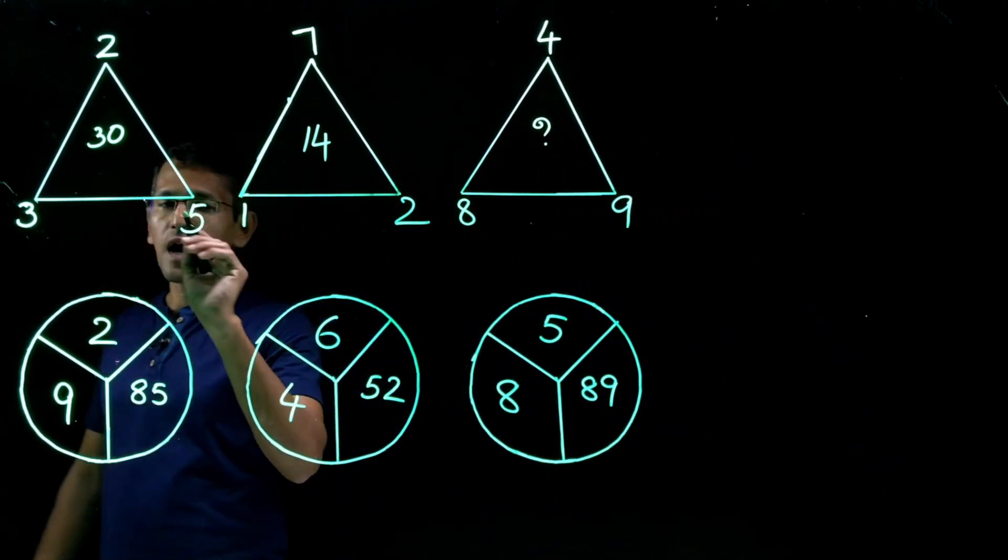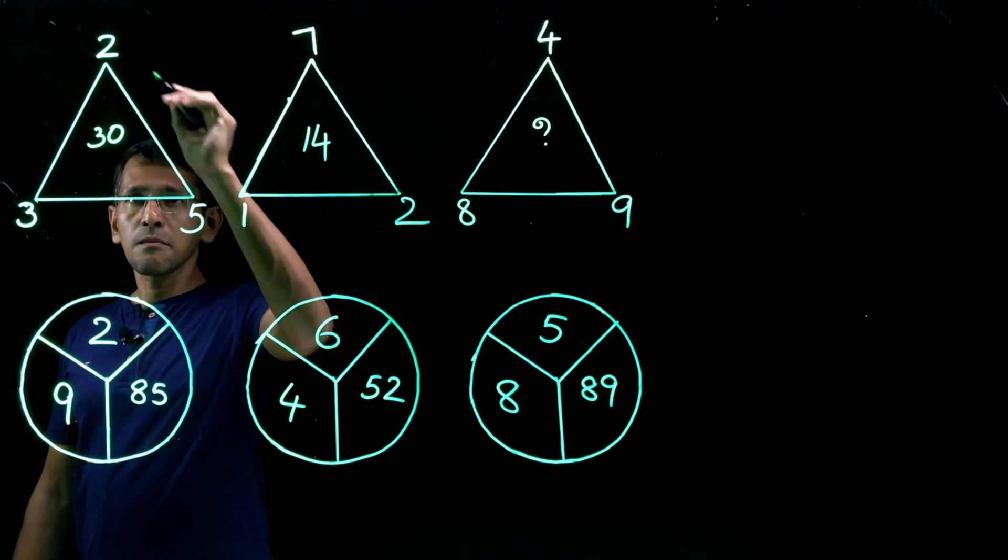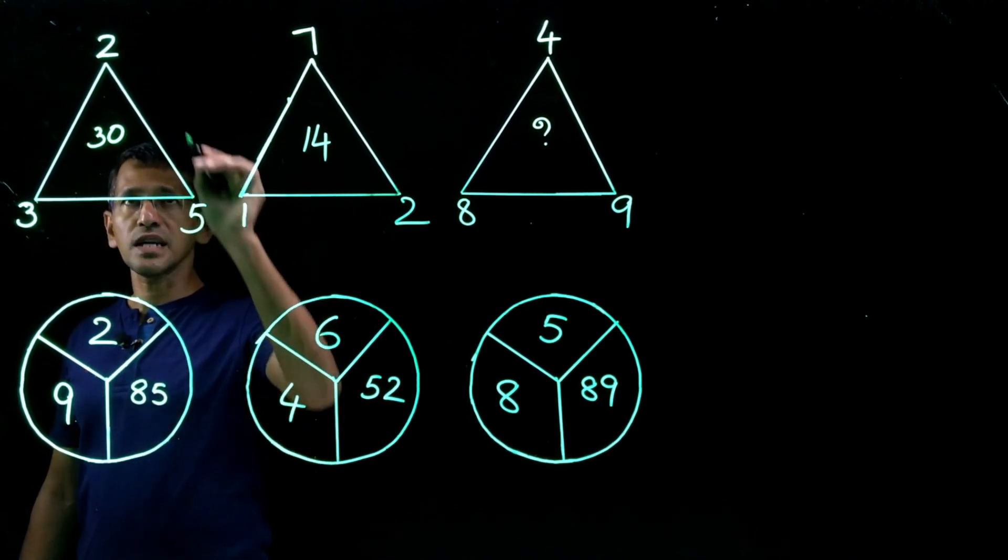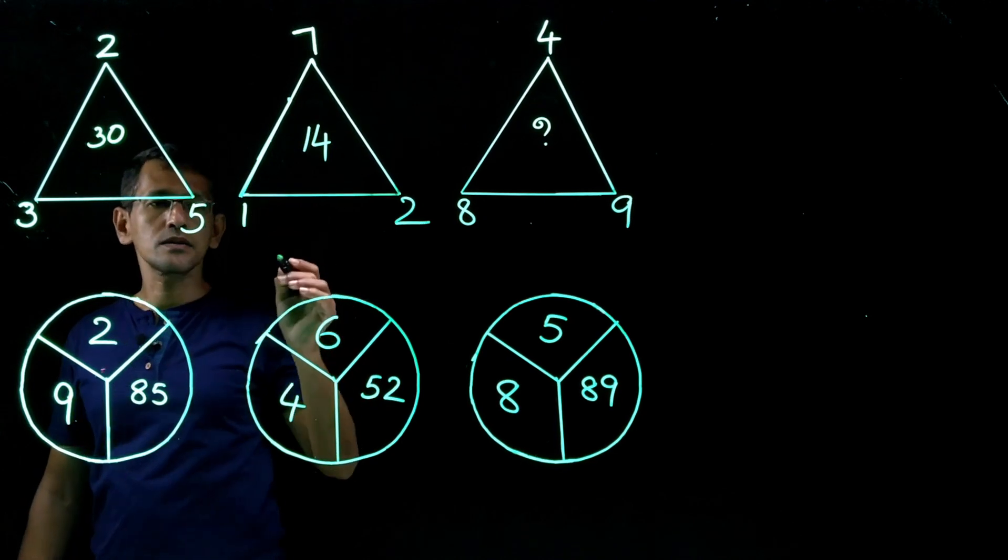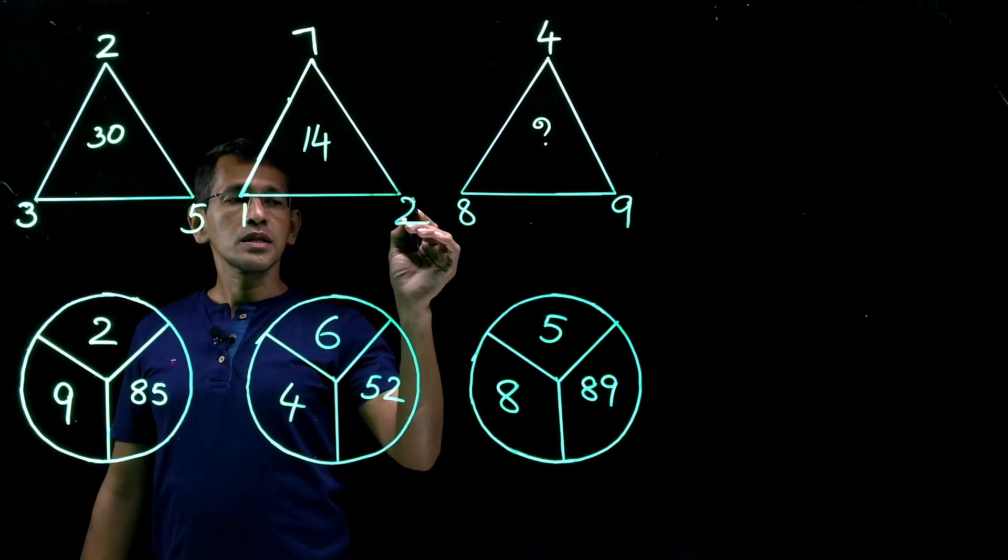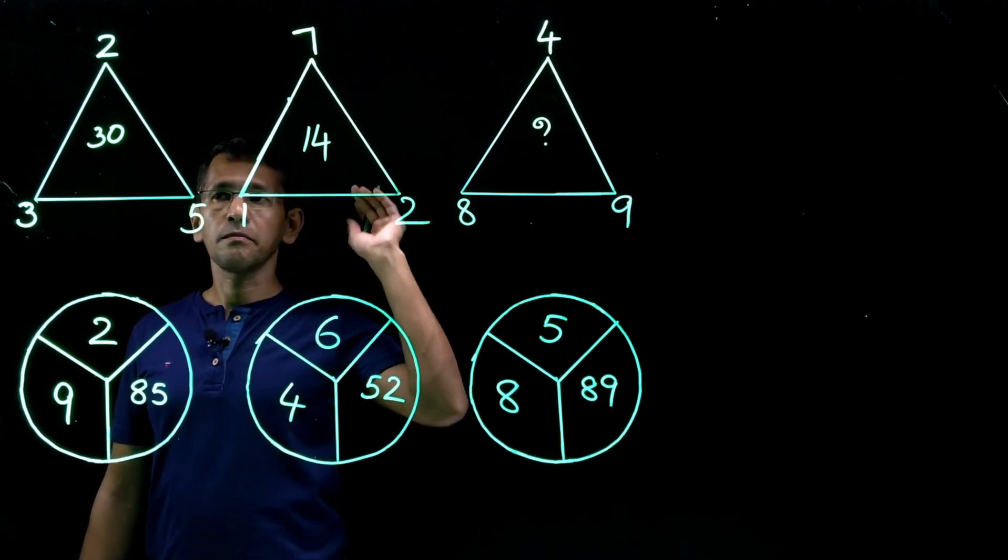So what's the pattern here? 3 into 5, 15 plus 2 is 17 but now it's 30. So 3 into 5, 15 into 2 is 30. That's pretty good. So then 1 into 2, 2, that 2 into 7, 14. Perfectly alright.